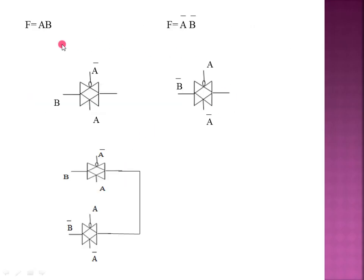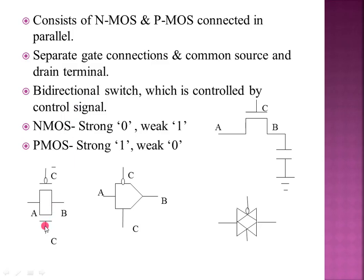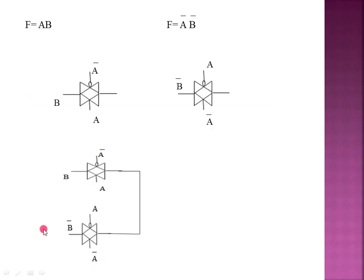Let's take an example. We have a function A and B. We implement A·B and A-bar·B-bar using pass transistor logic. In this diagram we have a pass in NMOS. The control signal selects the appropriate path.